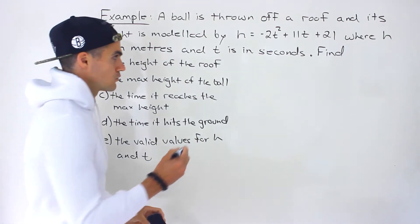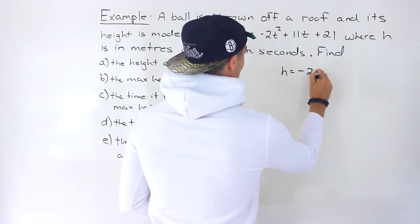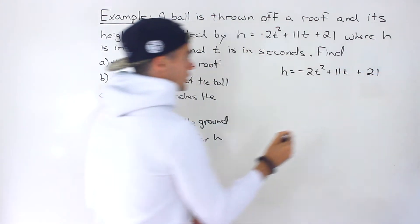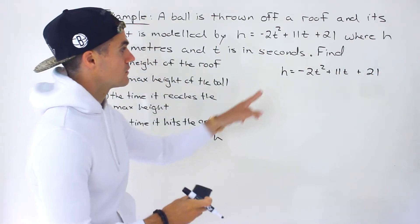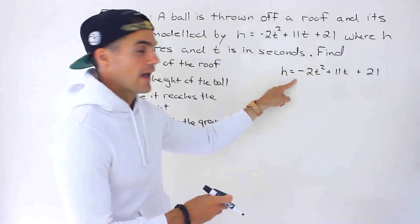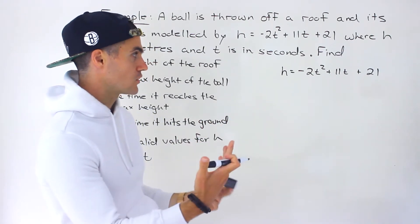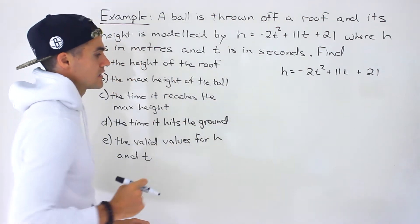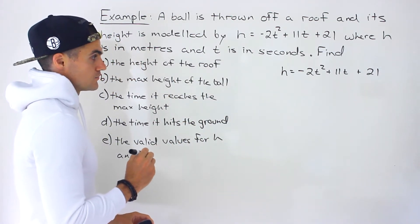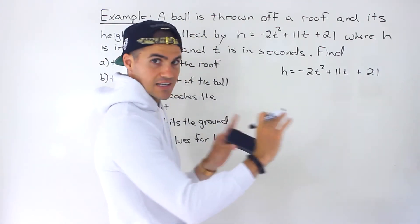The first thing I recommend is taking this quadratic and graphing it to get a bunch of characteristics. Think of it as just working with the quadratic on its own, not even related to a word problem. Then once we have the graph with all the different characteristics, it'll be a lot easier to answer the questions. We'll start by factoring to find the t-intercepts.